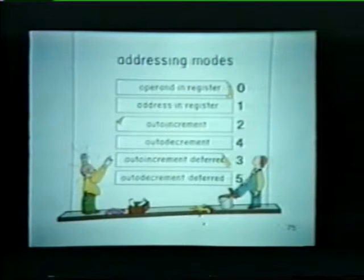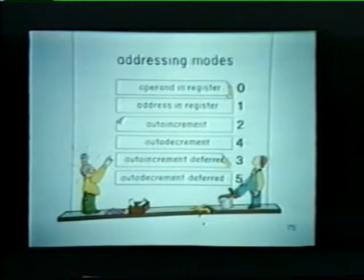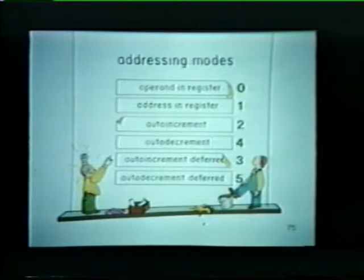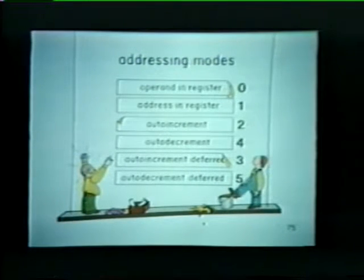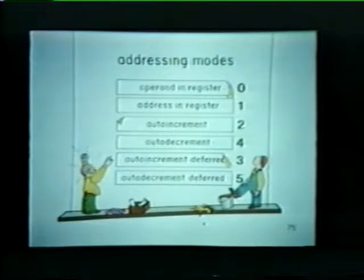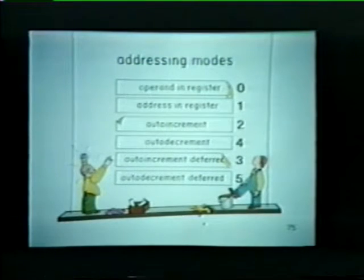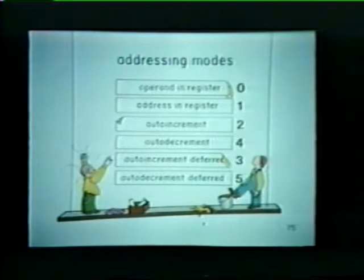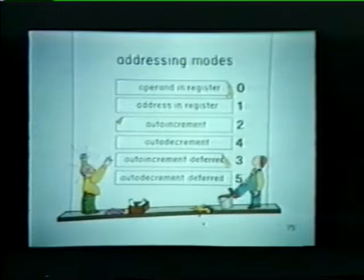Before our break, we covered these six addressing modes. Let's quickly review the function of each mode. Mode 0 provides immediate access to an operand since it's already stored in one of the processor's general purpose registers. If an operand is stored outside the CPU, for example in memory, we can use mode 1 to address the operand.